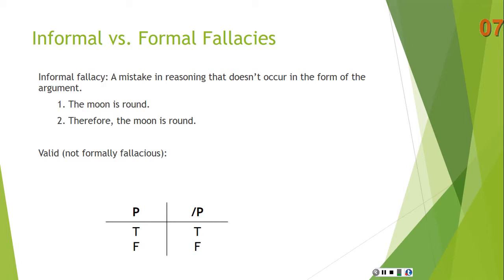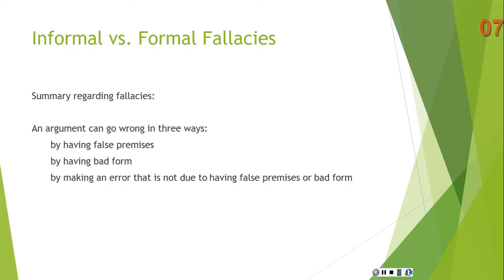So even a valid argument can commit an informal fallacy. Here's our summary: an argument can go wrong in three ways — it can have false premises, it can have bad form, or it can make an error that is not due to false premises or bad form. That third category is the category of informal fallacy. It's really a catch-all category for whatever error isn't due to false premises or bad form. In our section on informal fallacies, we'll look at some families of fallacies — this will give you an idea of some of the main kinds of errors in reasoning.